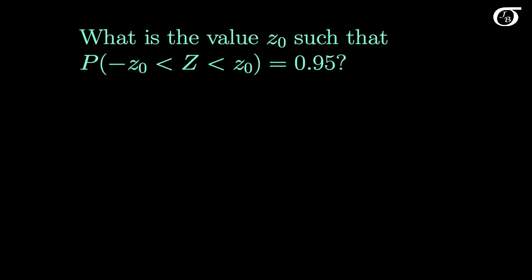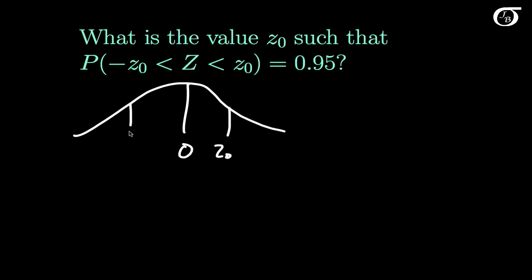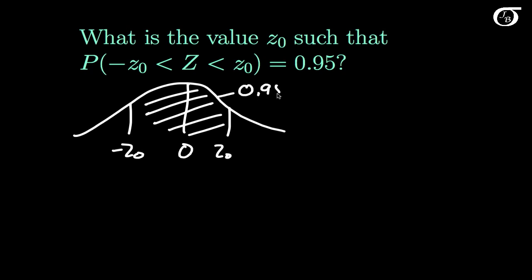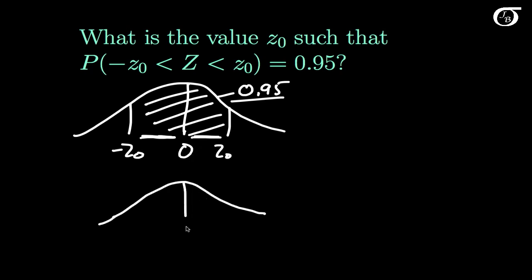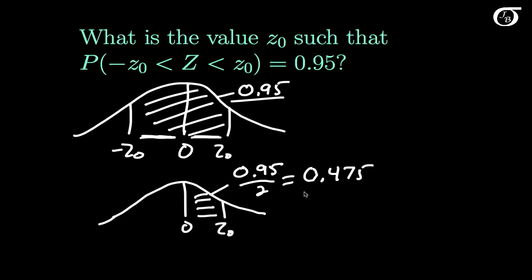What is the value Z₀ such that the probability Z lies between minus Z₀ and Z₀ is 0.95? Draw the picture: here's 0 in the middle, over here is some value Z₀, and over here is minus Z₀. The area under the curve between those two values is 0.95. The curve is symmetric about 0, so the area on each side of 0 is equal. We need to make ours look like the table: the area between 0 and Z₀ is half of 0.95, which is 0.475. That looks just like our table, so we can look up this area.